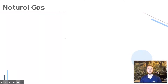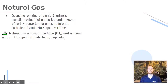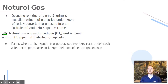Next, we'll talk about natural gas. Natural gas is formed from the decaying remains of mostly marine organisms buried underneath layers of rock and sediment, converted into oil and natural gas by pressure over millions of years. Natural gas is going to be mostly methane, which is CH4, and it's found on top of trapped oil deposits. It forms when an oil deposit is trapped in a porous sedimentary rock such as sandstone, with a hard impermeable cap rock on top that doesn't allow the natural gas to escape, forming a deposit humans can eventually extract.